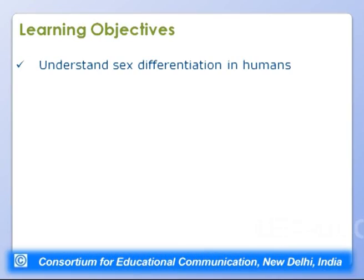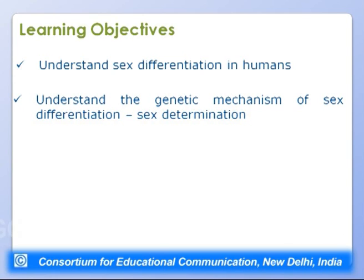In most diploid eukaryotic organisms, sexual reproduction is the norm, where offspring are produced by the fusion of two gametes — one from each parent, designated as male and female. Today's session will focus on the basis of sexual differentiation, particularly in humans, covering sex differentiation, the occurrence of male and female, and the genetic mechanism by which sex is determined.